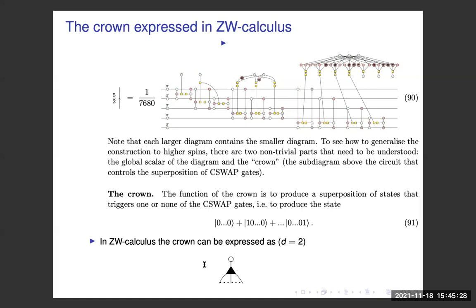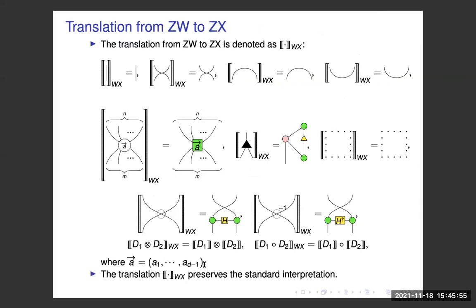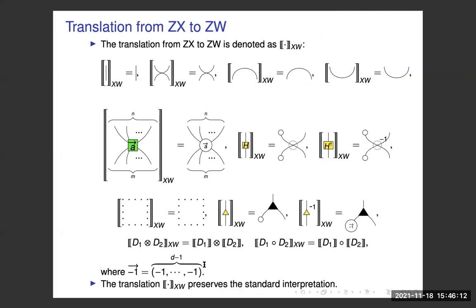Where does the crossing show up in the translation from algebraic QD-ZX to this calculus? It shows up in the d-dimensional Hadamard — that is where the crossing comes in. So we are going from something that doesn't require complex numbers to something that does require complex numbers, and the crossing enters through the Hadamard.